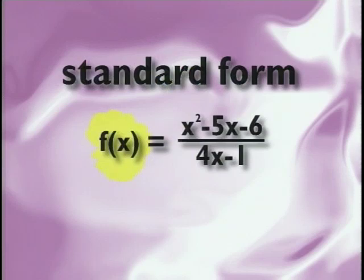But more often you'll see them like this: x squared minus 5x minus 6 over 4x minus 1. To emphasize that this is a function, we need only to put it into standard form by setting it equal to f of x.